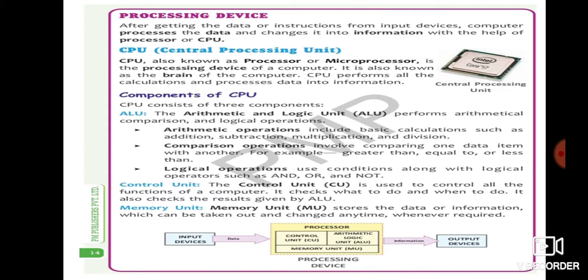Next is memory unit. Memory unit stores the data or information which can be taken out and changed anytime whenever required. So memory unit is a thing which stores data or information whenever taken out or changed and it can be changed anytime whenever we want to change it. So memory unit helps us to store the information in a computer for longer time. Even if we want after 10 years, 20 years, it will be there in our computer. So for that storing purpose we are using memory unit.